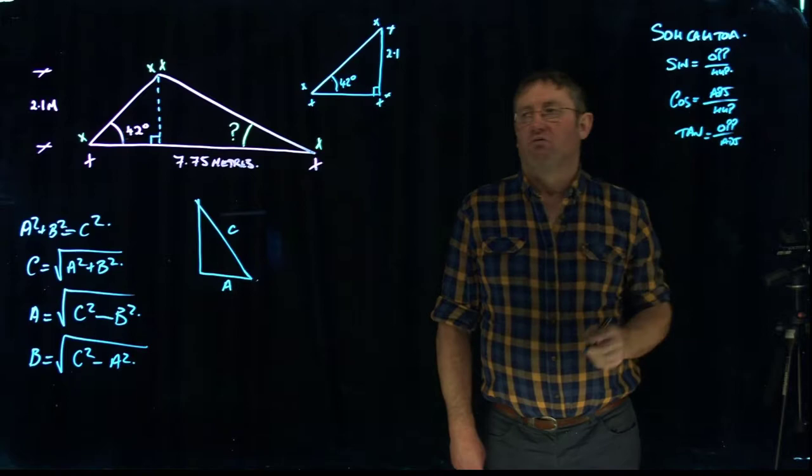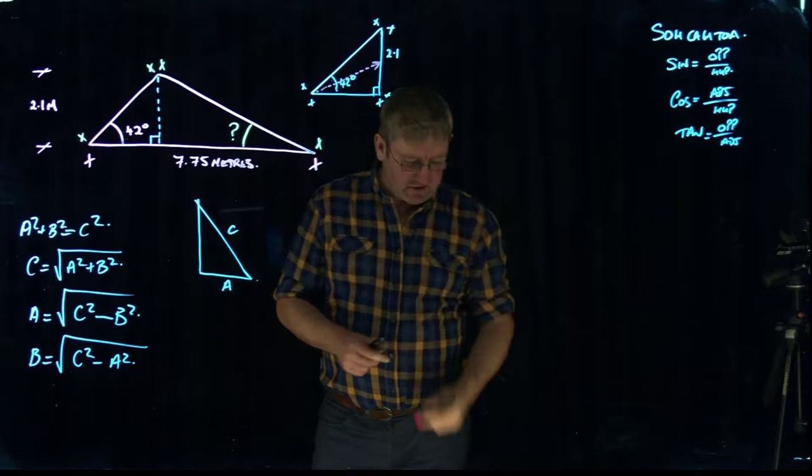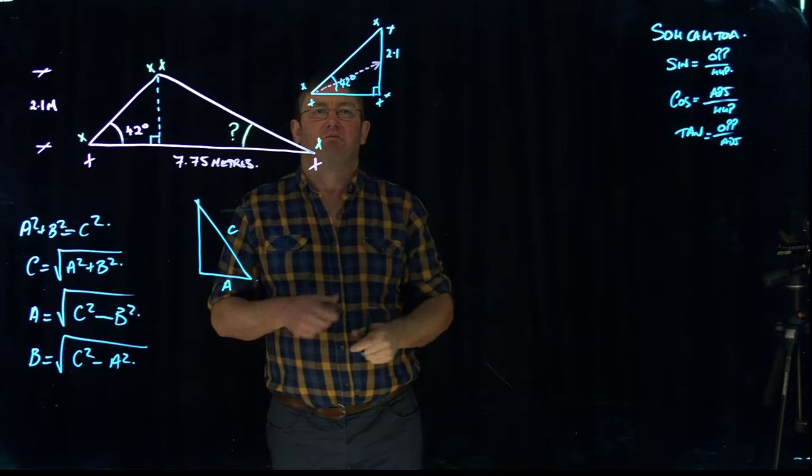So sine for the first one equals the opposite over the hypotenuse side. Cosine is the adjacent over the hypotenuse. And tangent is the opposite over adjacent. These are equals of course. So what information have we got? Well, where the angle is, if you project out through the angle straight across to the other side, that is always the opposite side. So wherever the angle is, the side that is opposite the angle, it's called the opposite. Pretty straightforward.